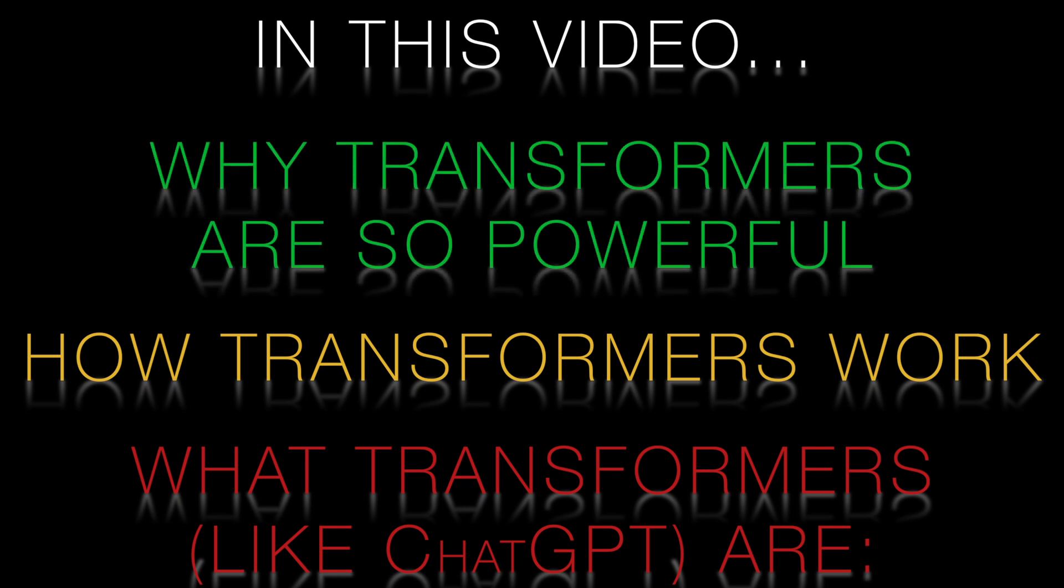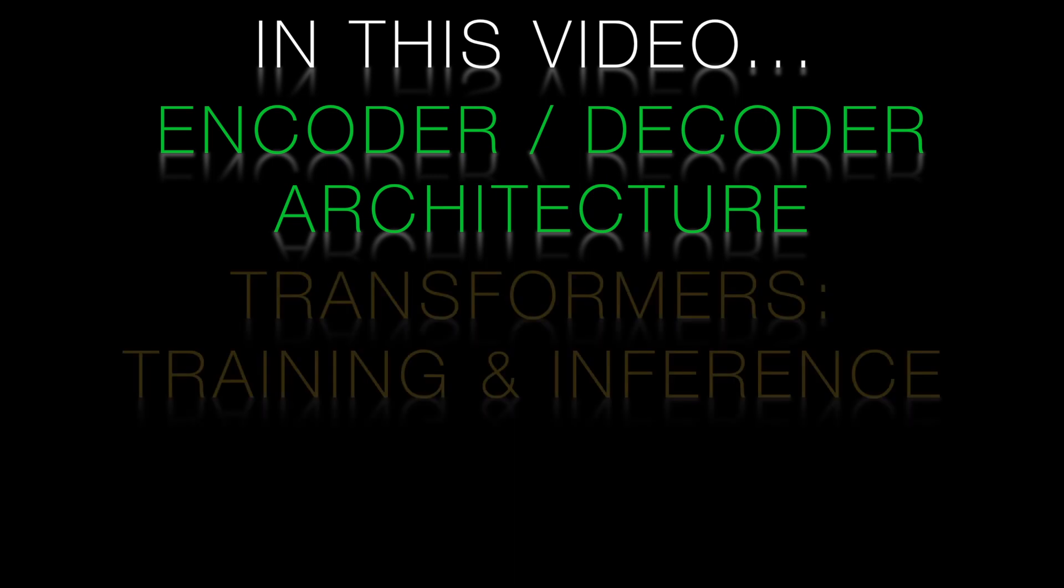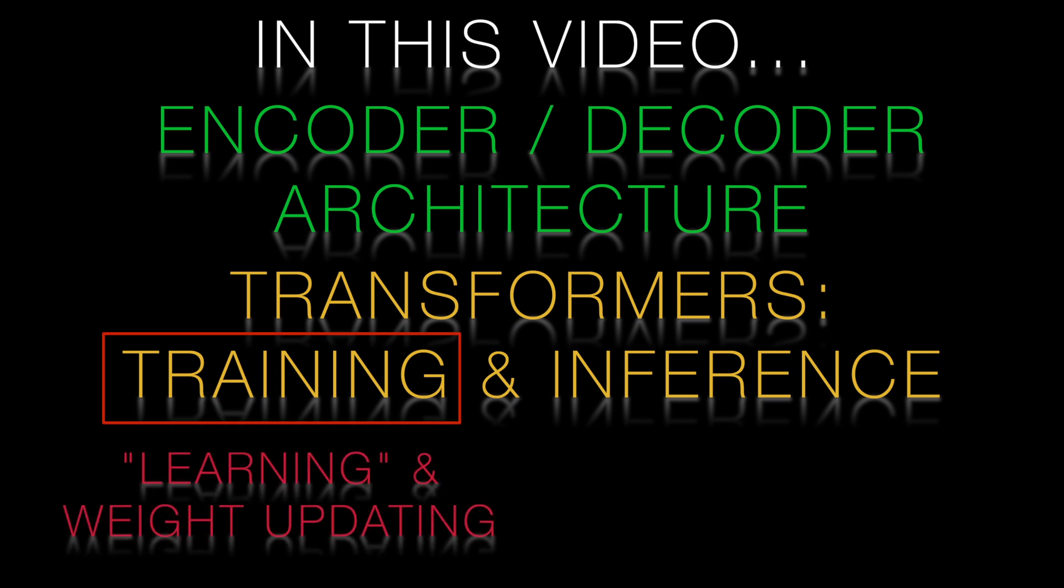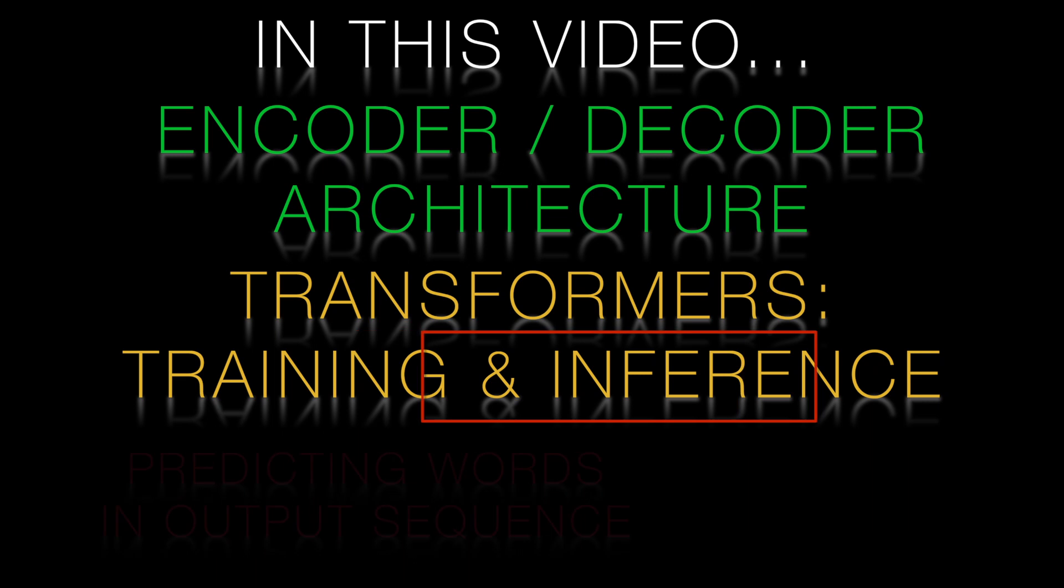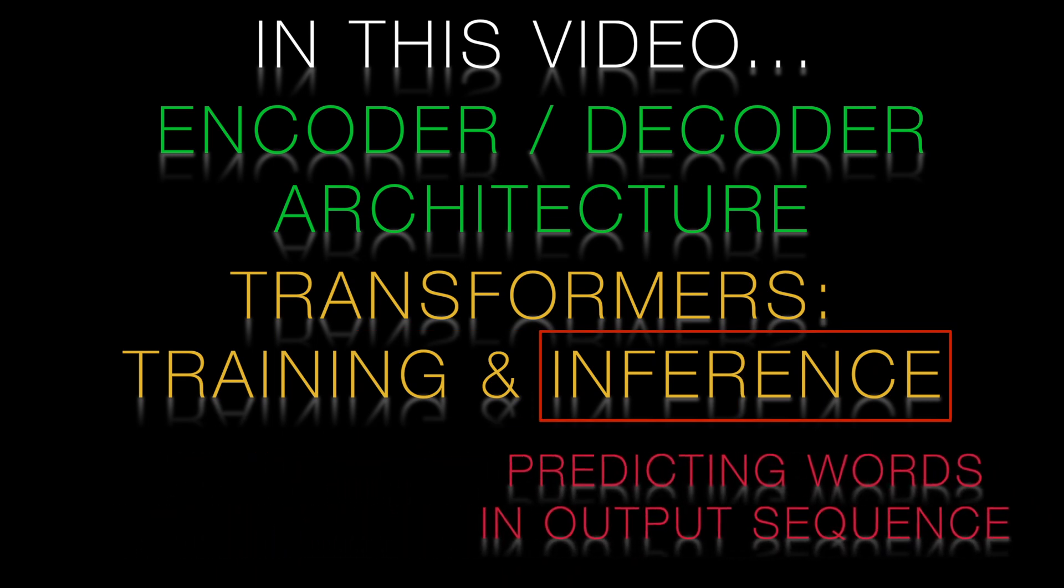We'll discuss the encoder-decoder architecture and look at what the transformer does during training and inference. Training is when it's learning by example and updating its weights. Inference is when it's running and predicting the next sequence of words.